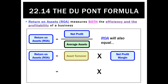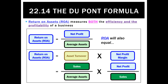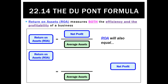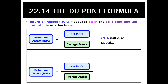Using an example: if we took sales divided by average assets we get asset turnover, and if we took net profit divided by sales we get net profit margin. But when we multiply those together, the sales numbers would actually cancel each other out, leaving just net profit over average assets, which is the formula for return on assets. So the mathematical basis is that by multiplying those two ratios together we'll get ROA anyway.